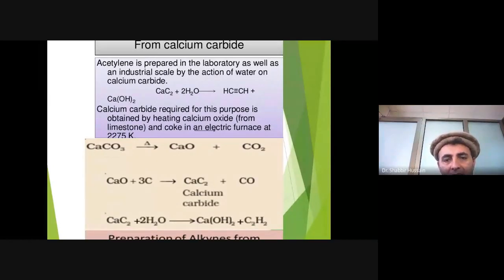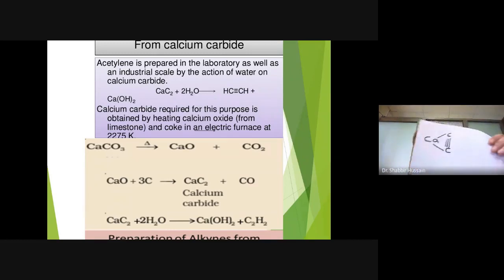Another method is calcium carbide. We are using calcium carbide. This is the structure of calcium carbide. Acetylene is prepared in the laboratory as well as on industrial scale, in large scale, by the action of water on calcium carbide. When calcium carbide is treated with two moles of water, we get acetylene as a product.